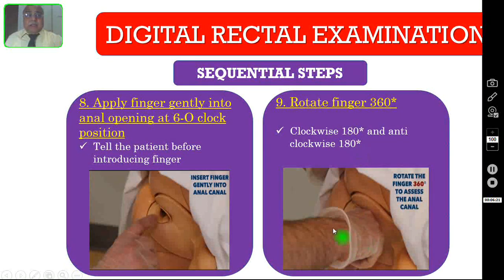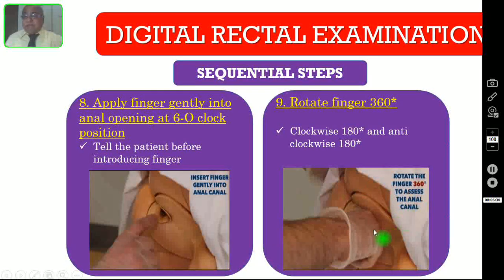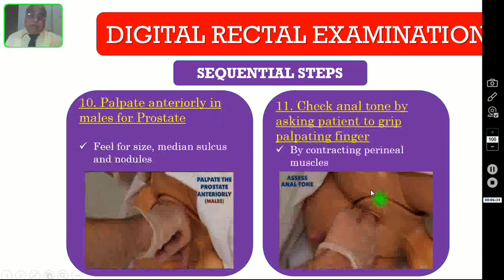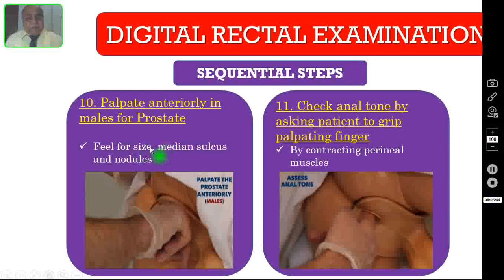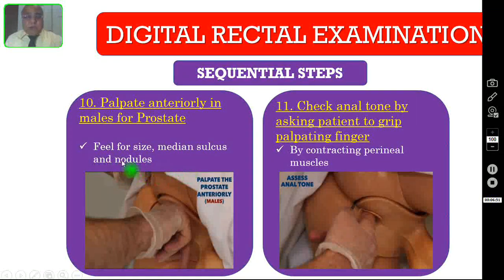By doing this rotational manoeuvre, you can find out whether there are any polyps or any growth in the anal canal or in the lower part of the rectum. Then you have to palpate anteriorly — in the case of male patients — for any prostatic pathology. You have to feel for the size of the prostate, the status of the median sulcus, whether it is palpable or not, and whether the surface is smooth or nodular.